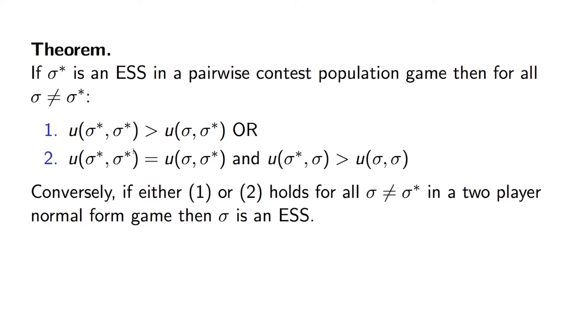What this realistically means is that to find evolutionary stable strategies, we simply need to obtain all Nash Equilibria for the corresponding normal form game and then check these conditions.